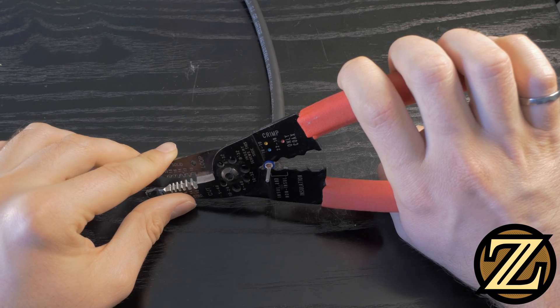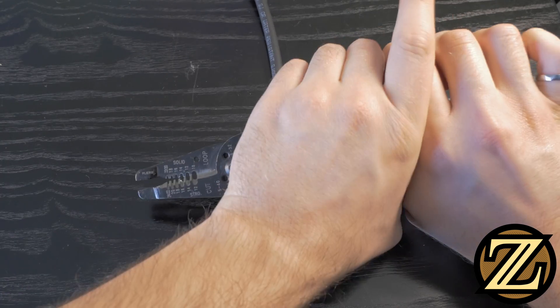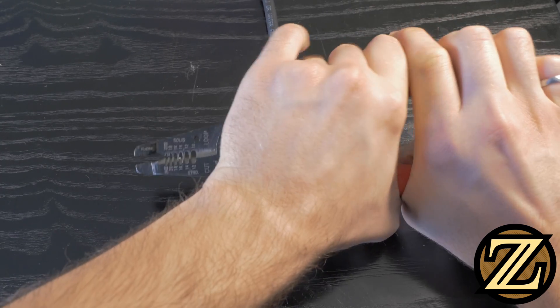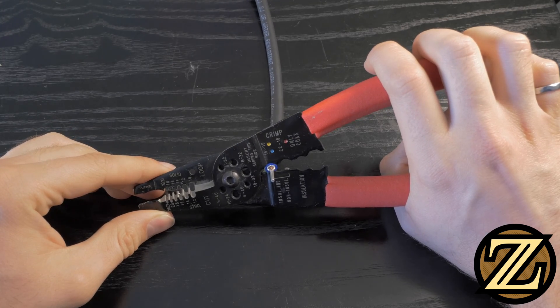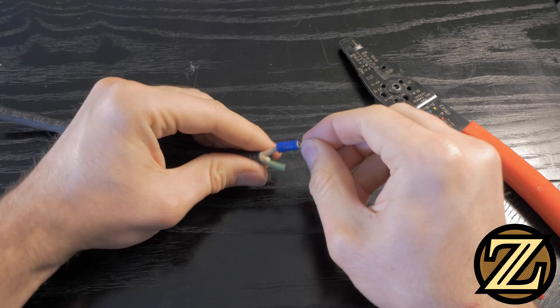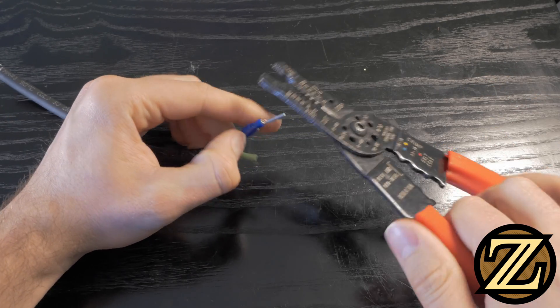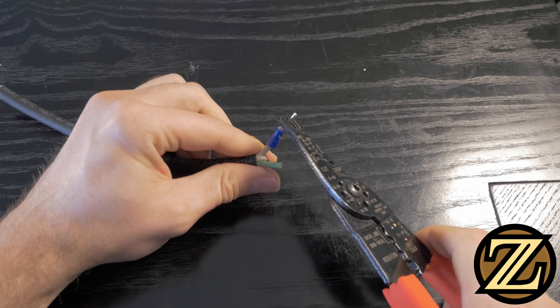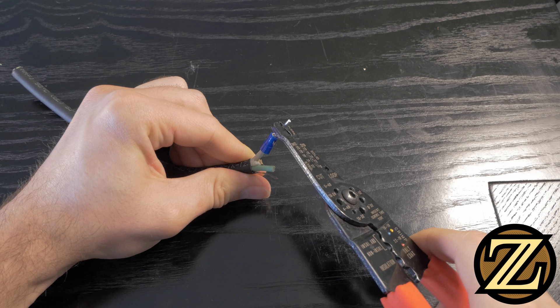When you're all set up, squeeze and squeeze hard. If you require two hands to get the leverage because you're filming a video like this and it's awkward, that's okay, as long as you can squeeze hard enough to actually get the crimp job done. When you're done, you should not be able to remove the terminal off the end of your wire. You can even take your pair of pliers and try and pull it. And if you can't remove it, then you know you've done the job correctly.